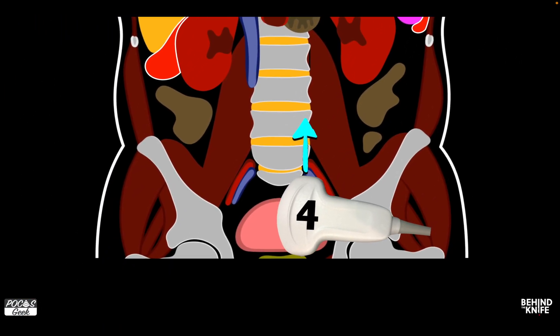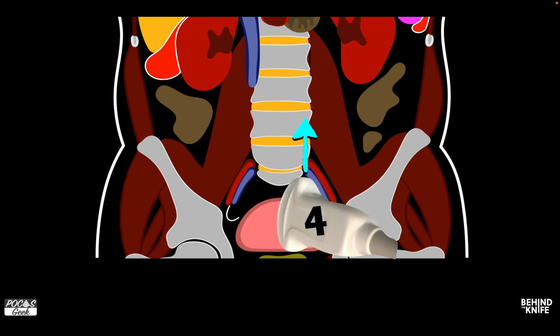Moving on, we're going to evaluate the lower abdomen by placing the probe in the midline with the probe marker towards the patient's head, just superior to the pubic bone. We do want to identify the bladder, but we need to keep in mind that the bladder is a pelvic structure, and so we actually want to see fluid superior to the bladder in the intraperitoneal space.